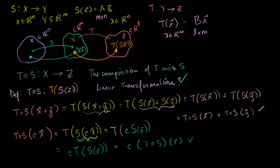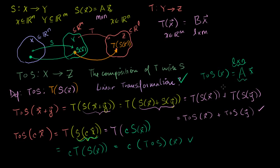Since the composition is a linear transformation, it can be written as some matrix times our vector X. We're going from an n-dimensional space to an l-dimensional space, so this matrix has n columns and l rows — it's an l by n matrix. In the next video, now that we know this is a linear transformation representable as a matrix-vector product, we'll figure out how to express this matrix in relation to the two matrices A and B that define transformations S and T.